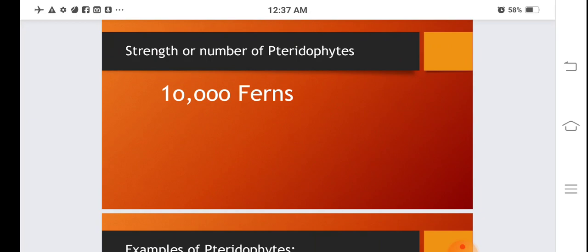Strength or number of pteridophytes: approximately 10,000 ferns or 10,000 different species of pteridophytes are found nowadays.